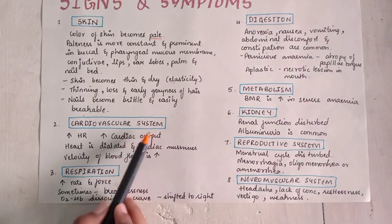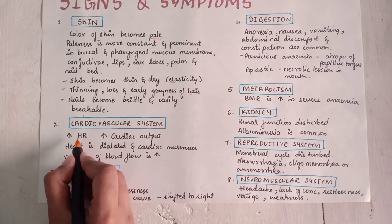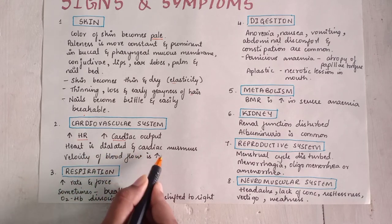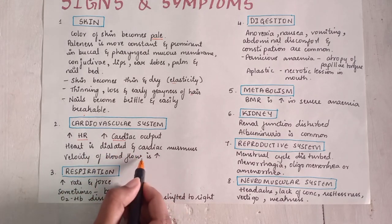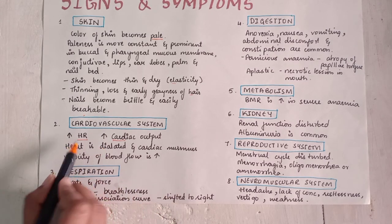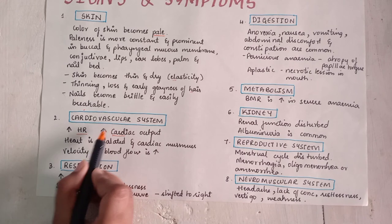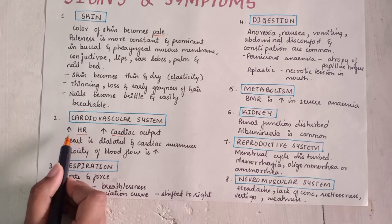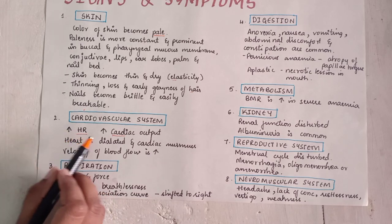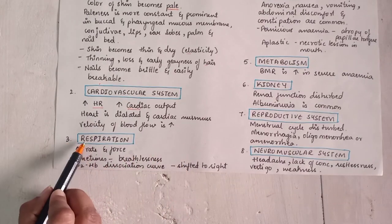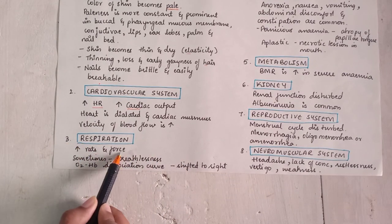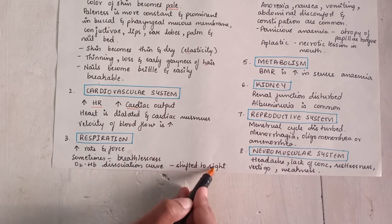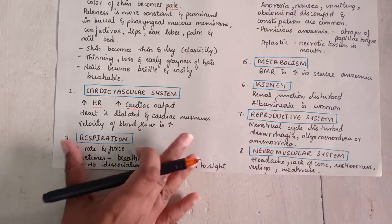Next, the cardiovascular system: there is increased heart rate and increased cardiac output. The heart is dilated and cardiac murmurs can be heard. Velocity of the blood is also increased. Heart rate is increased because the body needs more oxygen, so the heart has to work much harder. In respiration, there is increased rate and force. Breathlessness can be seen, and the oxygen-hemoglobin dissociation curve is shifted to the right.